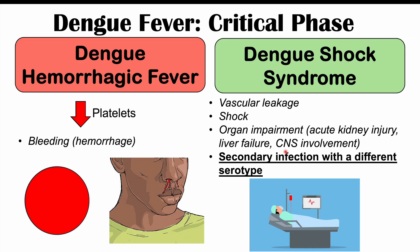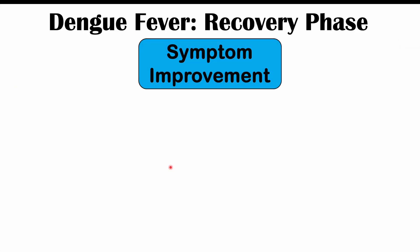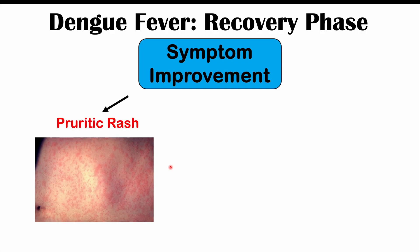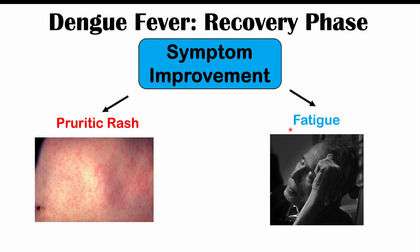The critical phase can last for a couple of days, then patients move into the recovery phase, where there is symptom improvement. However, even with improvement in symptoms and stabilization of vital signs, new symptoms can occur. One is a new onset of a pruritic — itchy — rash that can erupt in the recovery phase. The first rash wasn't itchy, but this one will be. We can also see fatigue occurring, and fatigue can last for a couple of days, but it could also last for weeks to months as a long-lasting effect of dengue fever infections.